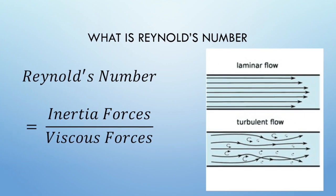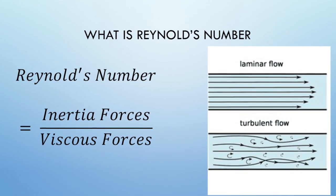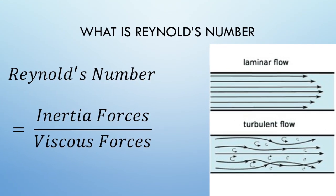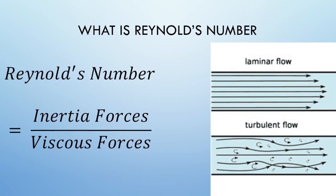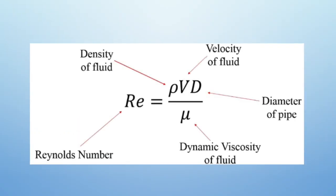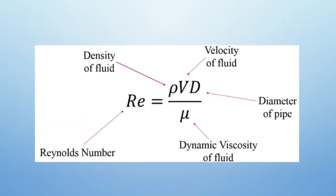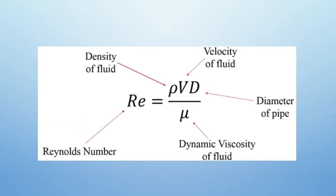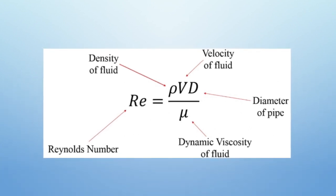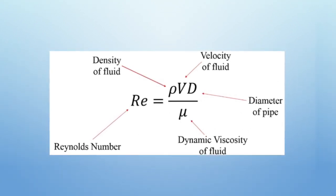Reynolds number is the ratio of inertia forces and viscous forces, and it helps to determine whether the flow of the water is laminar or turbulent. Here we have the Reynolds number equation, which consists of density, velocity, diameter, and viscosity.